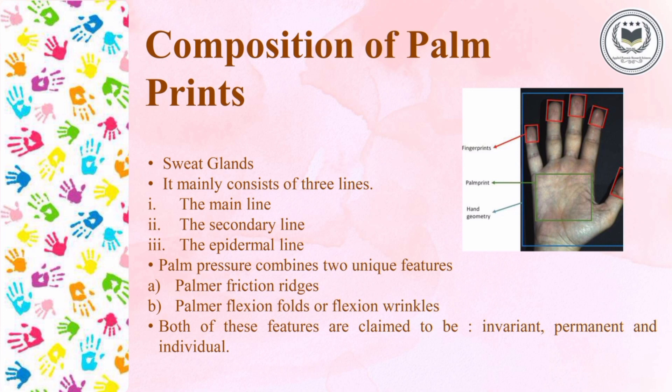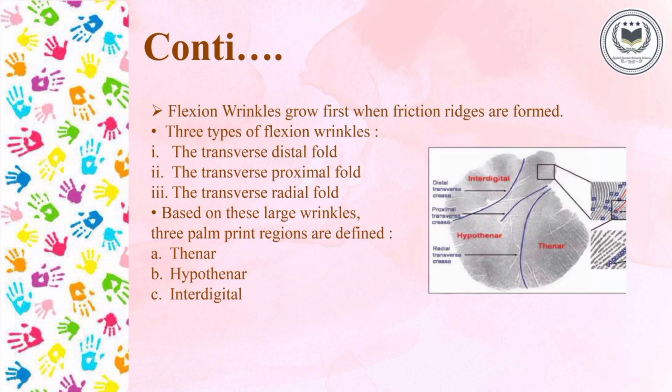Palm prints are mainly composed of sweat glands and three main lines: the main line, the secondary line, and the epidermal line. Palm pressure combines and forms two unique features which are palm friction ridges and palm flexion wrinkles or flexion folds, which are invariant — meaning they do not change throughout life. They are permanent and individual to each person.